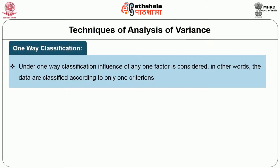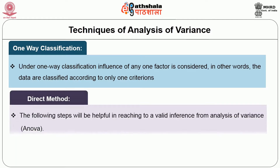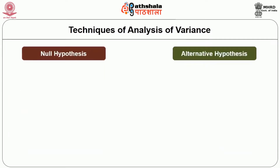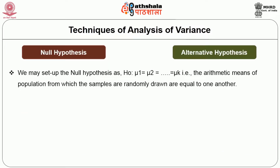Under one-way classification, the influence of any one factor is considered; in other words, the data are classified according to only one criterion. The direct method involves the following steps. The first step is to set up the null hypothesis: H₀: μ₁ = μ₂ = ... = μₖ — that is, the arithmetic means of the populations from which the samples are randomly drawn are equal to one another.